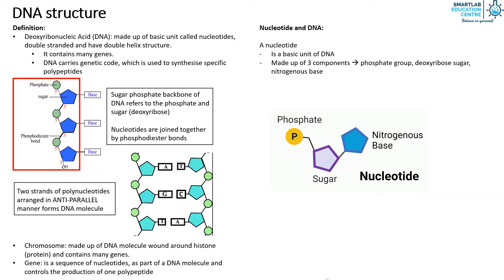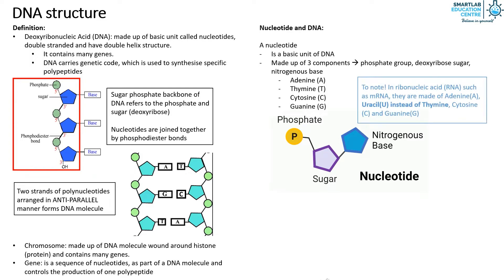For DNA, there are four nitrogenous bases which are adenine, thymine, cytosine, and guanine. Do note that in RNA, which stands for ribonucleic acid such as mRNA, they are made of adenine, uracil, cytosine, and guanine instead. Uracil is the equivalent of thymine.